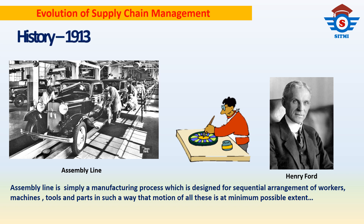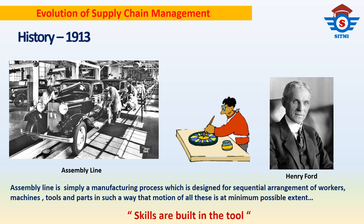Mass production took a boom in this era, and the term became popularized in the late 1920s. Mass production was also referred to as flow production or continuous production. It is simply the production of large amounts of standardized products, especially on assembly lines. One description of mass production is that the skill is built into the tool, meaning the worker using the tool may not need the skill.